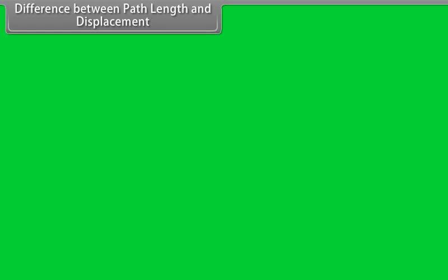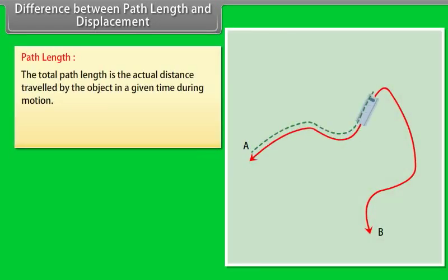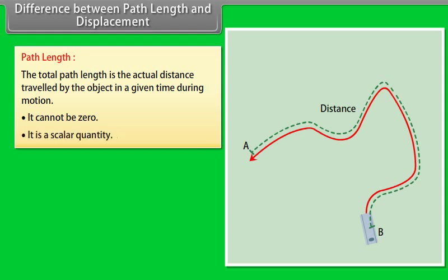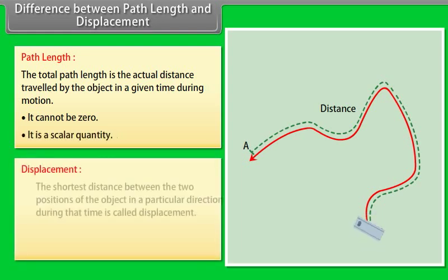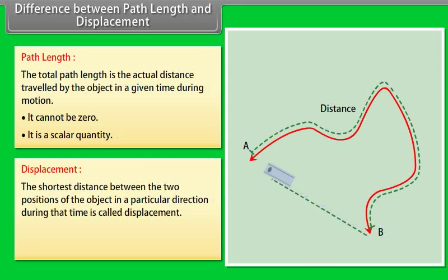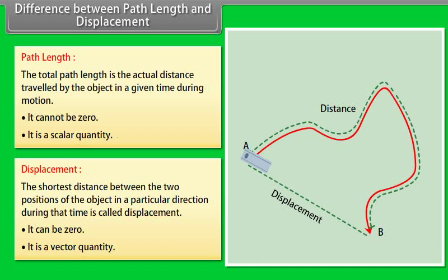Path length and displacement: Path length is the total distance traveled by the object in a given time during motion. It cannot be zero and is a scalar quantity. Displacement is the shortest distance between the two positions of the object in a particular direction during that time. It can be zero and is a vector quantity.